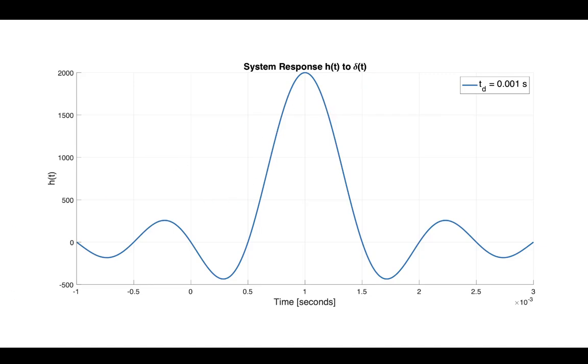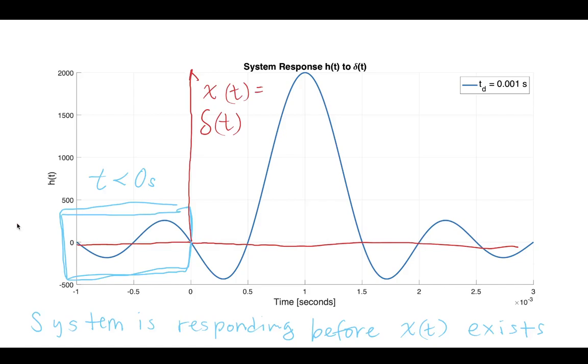Now, what does that mean and why is that actually going to be a problem? Well, if our impulse function starts at time zero, we can see right now that this part of our transfer function in the time domain is actually responding to this input before the input exists. So clearly that's a problem, right? We cannot realize that in real life.